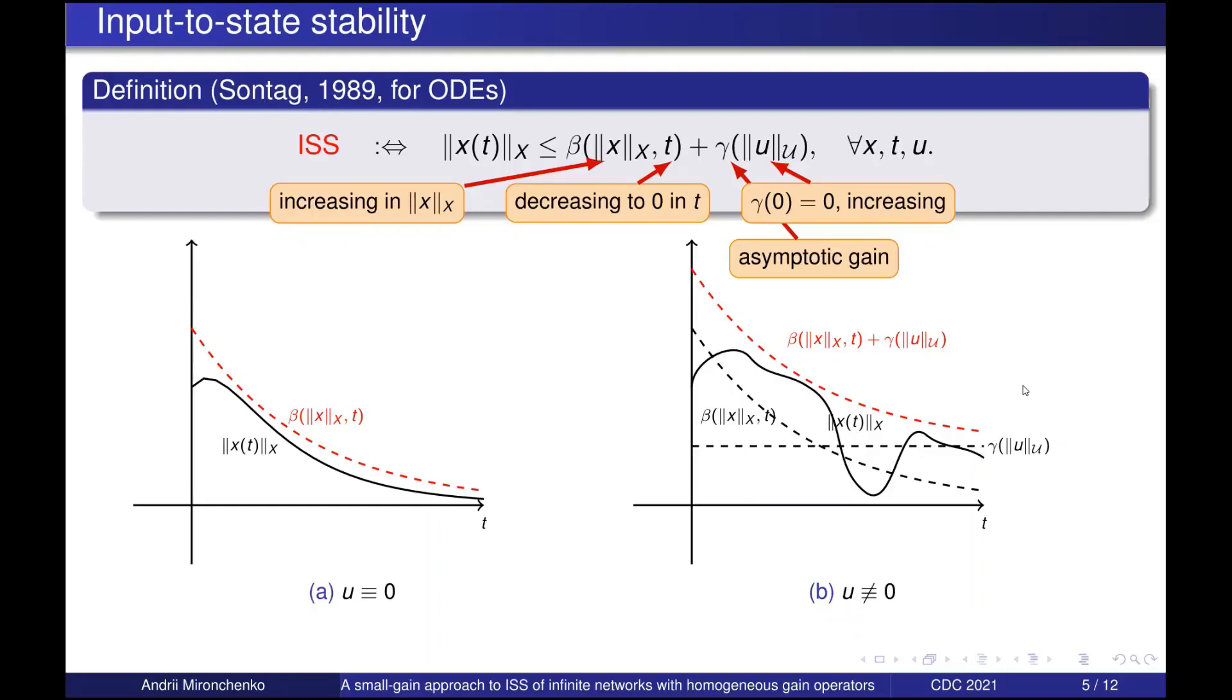In this way one can see that ISS unifies the asymptotic stability in the sense of Lyapunov and the input to output stability.